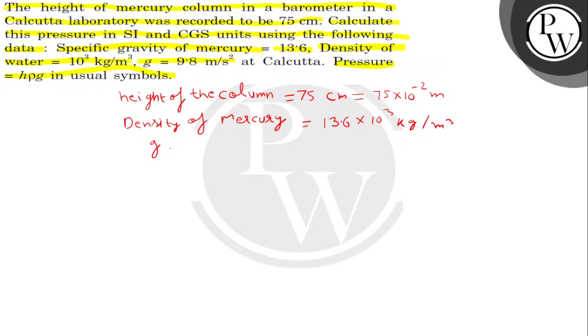Now, g is also given to us as 9.8 meter per second square. First of all, we will apply the formula P is equal to H rho g.